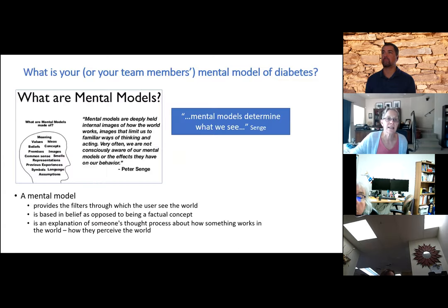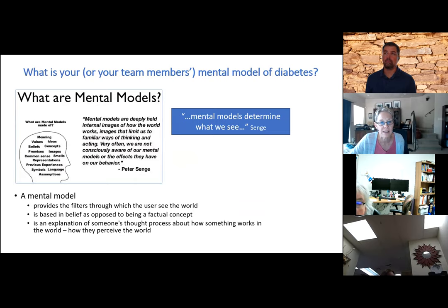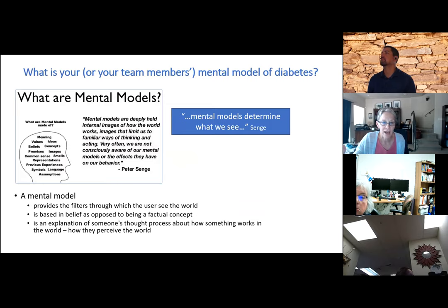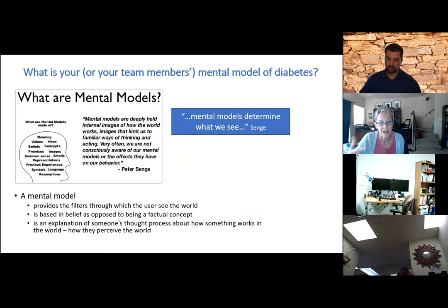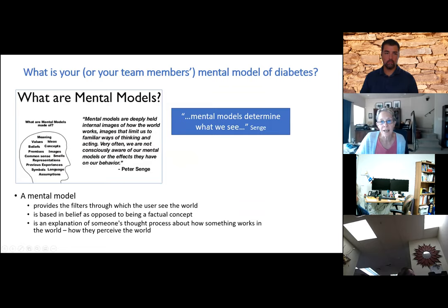To start to dissect that, we need to think about what is your mental model — or what are your team members' mental model — of diabetes. A mental model is the image that you have of something. It's the filter you see things through, and it's based more on beliefs than on actual facts. It's the explanation of someone's thought process about how something works, how they perceive it. As Peter Senge says, mental models determine what we see.